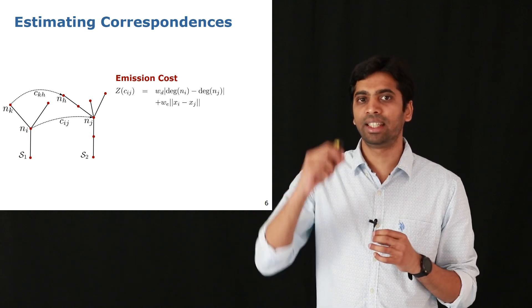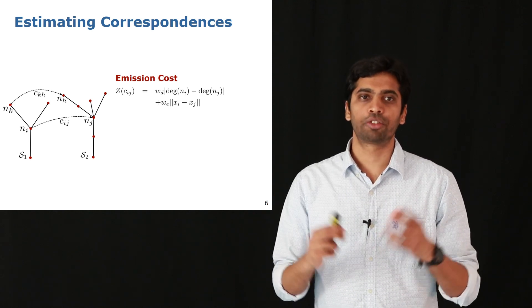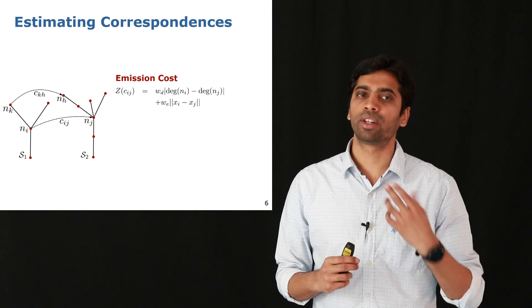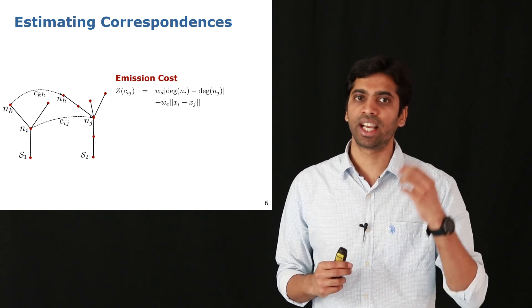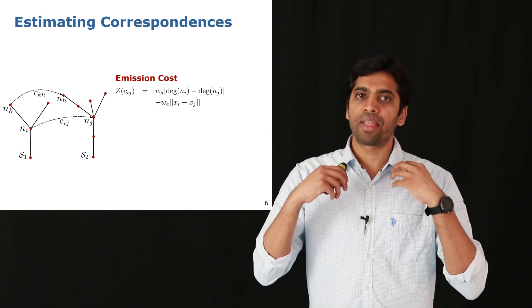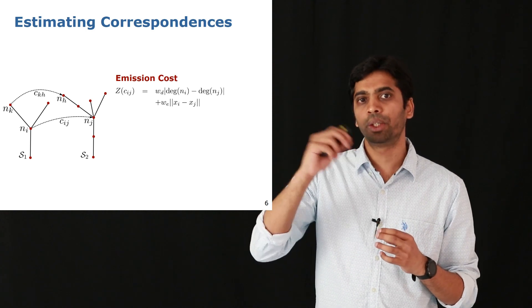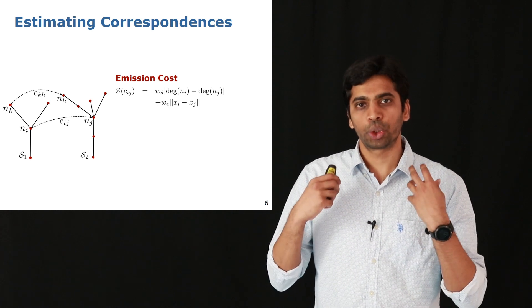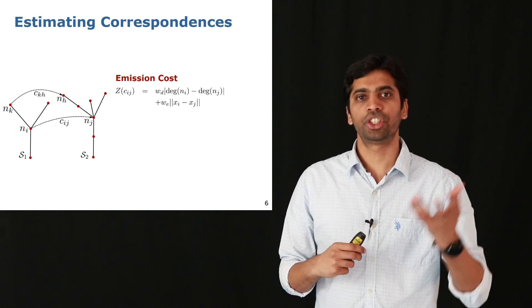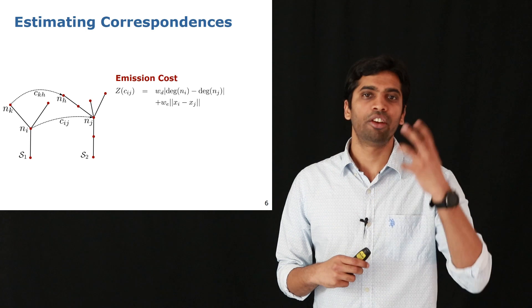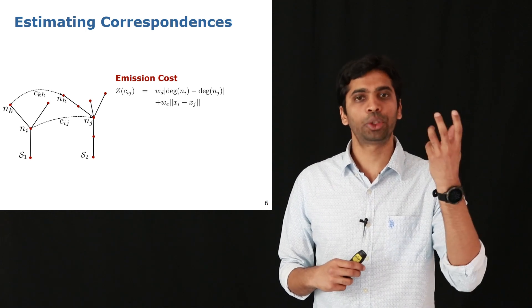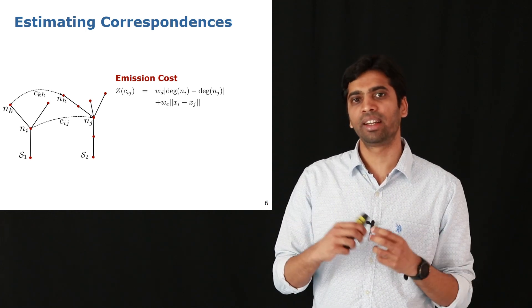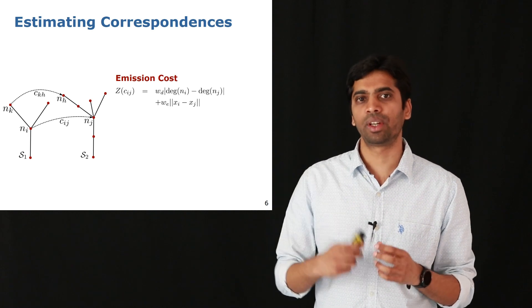One is a difference in the degree of these nodes. For example, the degree of the node Ni on S1 is 3 as it has three edges connected to it. The second term is the difference in the Euclidean position of these nodes. The idea is to choose that correspondence which lowers the emission costs by choosing nodes which have similar degree and are near in Euclidean space.